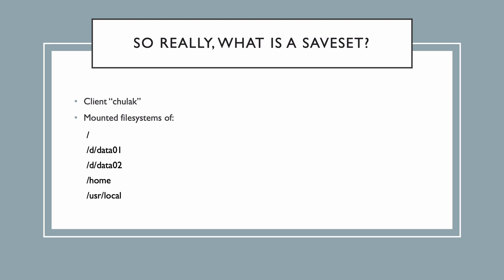Let's start with a simple example. Imagine you want to backup a physical Linux client called Chulak. With networker, when you configure a client, you can tell it to backup everything on the client by configuring the backup selection as All.